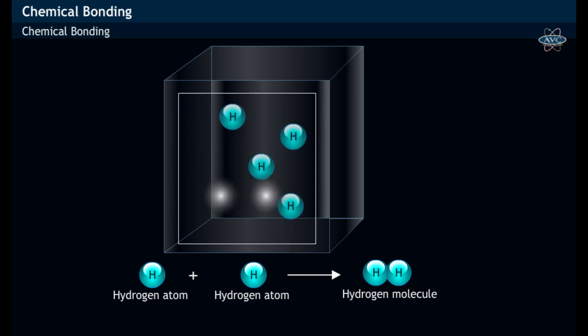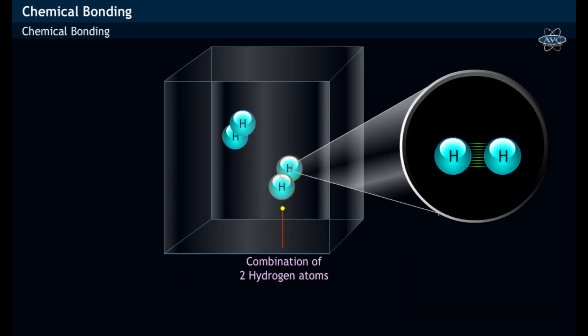When two hydrogen atoms combine with each other, a chemical bond is formed between the two atoms and thereby forms a hydrogen molecule.